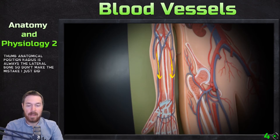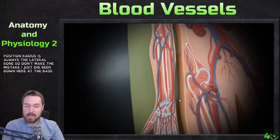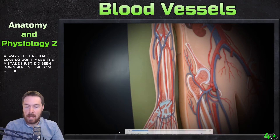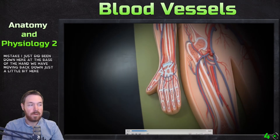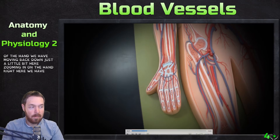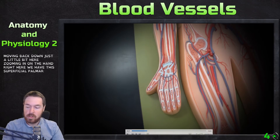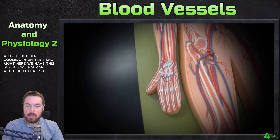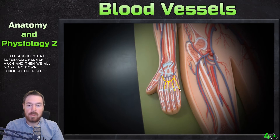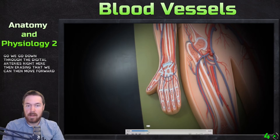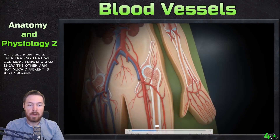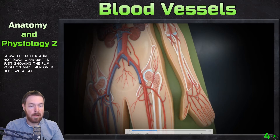Down at the base of the hand, zooming in, we have the superficial palmar arch right here. Then we go down through the digital arteries. The other arm shows the flip position, and over there we also have what's called the deep palmar arch, so there's both a superficial and a deep palmar arch on this model.